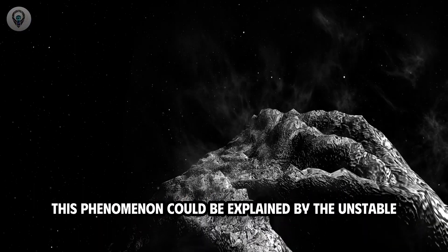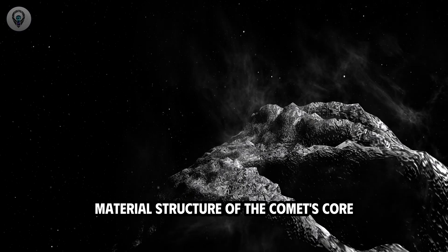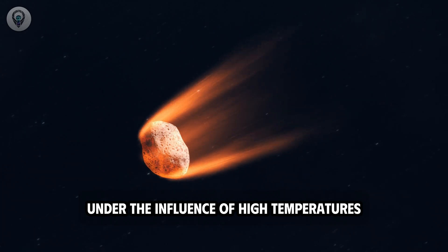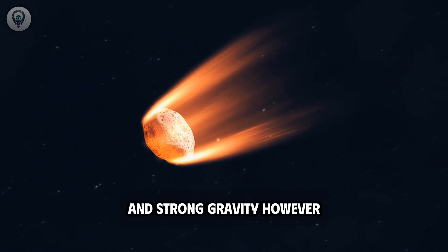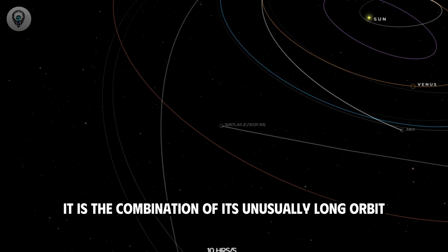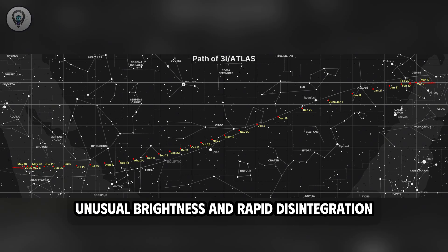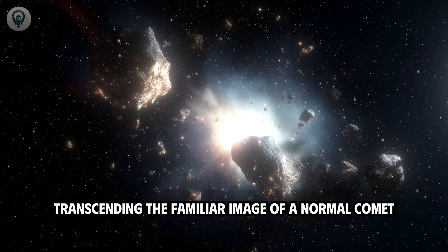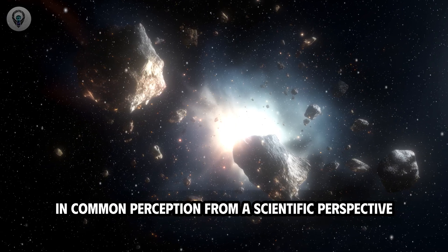Scientifically, this phenomenon could be explained by the unstable material structure of the comet's core under the influence of high temperatures and strong gravity. However, it is the combination of its unusually long orbit, unusual brightness, and rapid disintegration that makes Atlas a unique case study, transcending the familiar image of a normal comet in common perception.